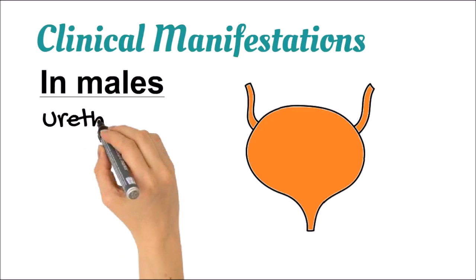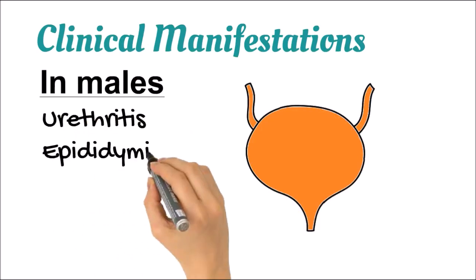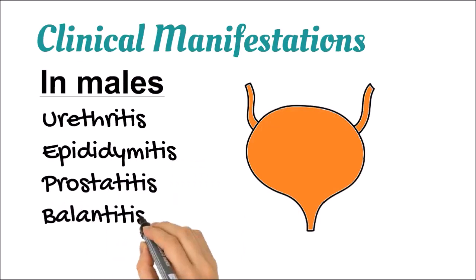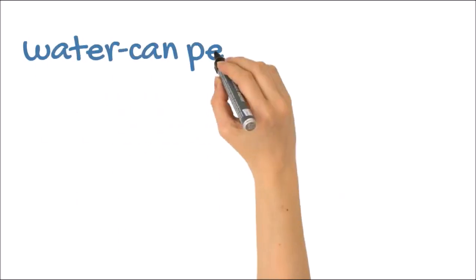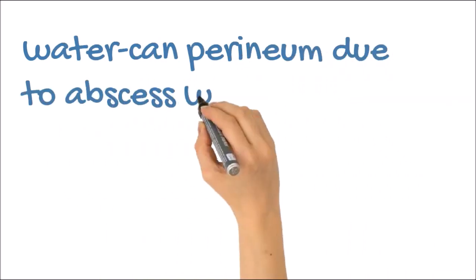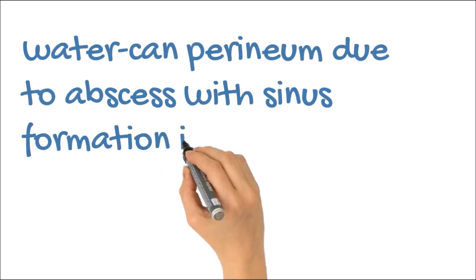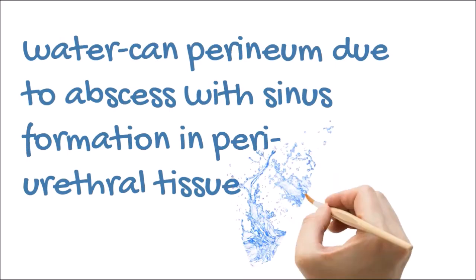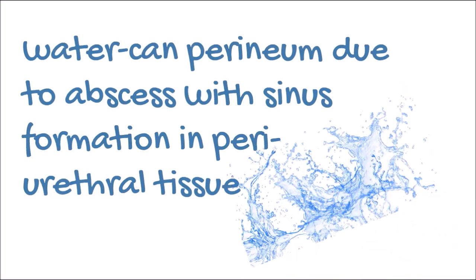We will be discussing the clinical manifestations caused by gonorrhea. In males, it can cause acute urethritis or inflammation of the urethra, epididymitis or inflammation of the epididymis, prostatitis or inflammation of the prostate gland, and balanitis or inflammation of the tip of the penis and foreskin, mostly in uncircumcised men. There is another complication called watering can perineum, which occurs if the infection spreads to periurethral tissue, causing an abscess with sinus formation.